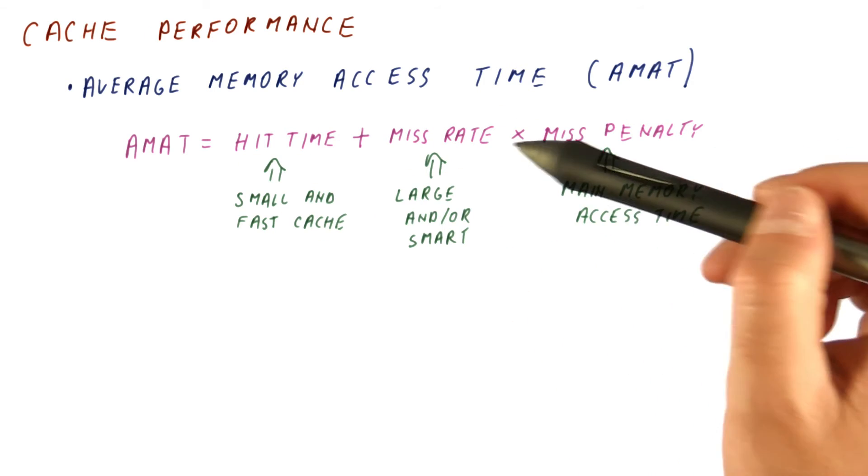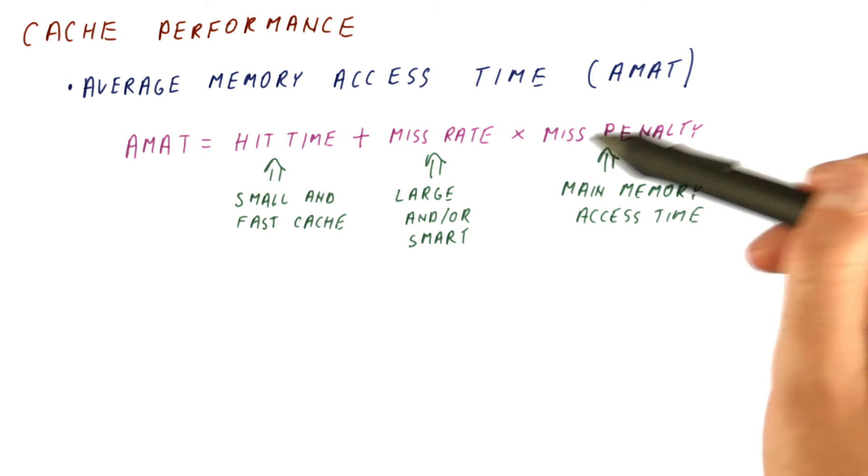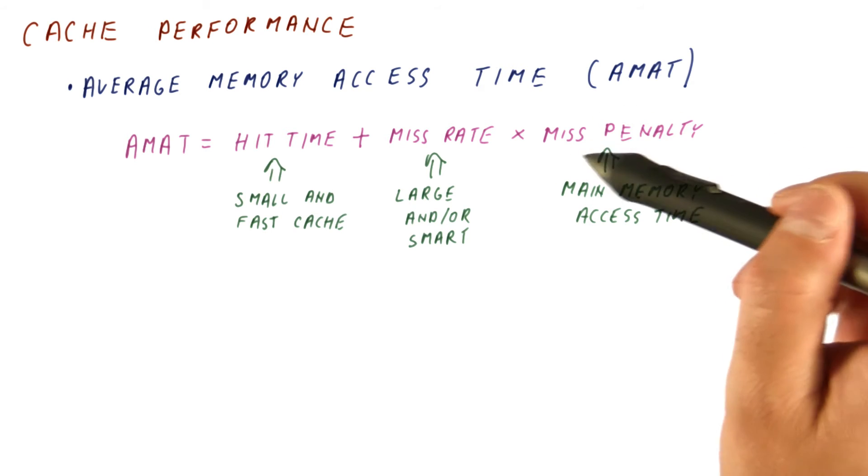Some caches will have a relatively large hit time, but extremely low miss rates, so that we can reduce the overall contribution of main memory accesses that contribute a lot each time we have them.